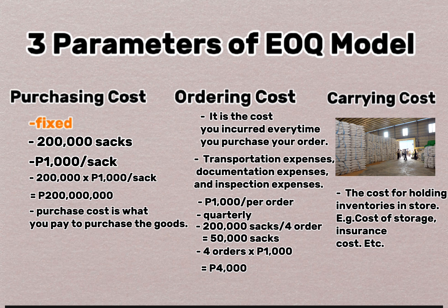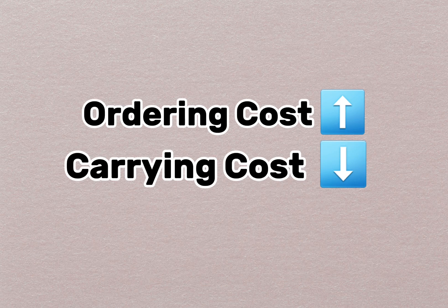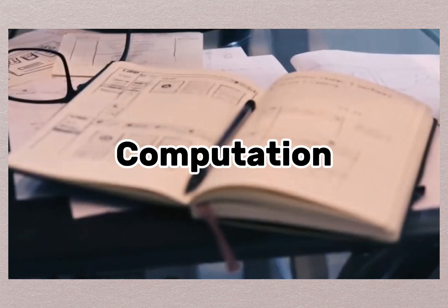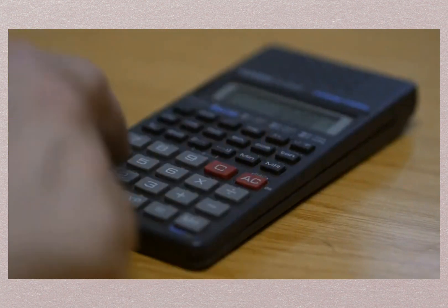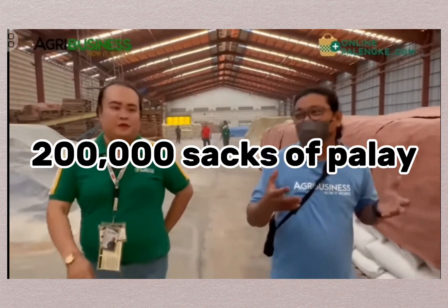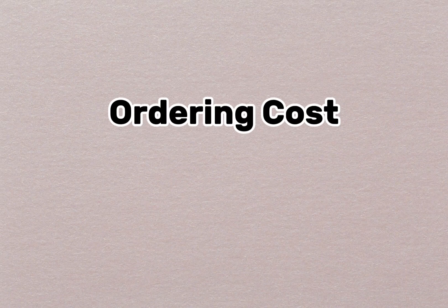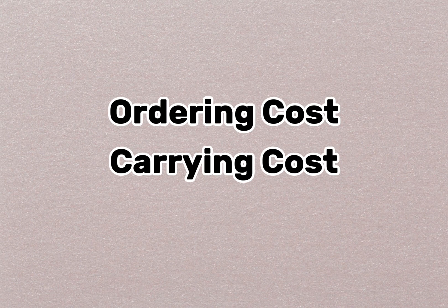So those are the three parameters of EOQ model. Purchasing cost is fixed, while ordering cost and carrying cost have a negative relationship. Why? Because when the ordering cost is more, carrying cost is less. If carrying cost is more, ordering cost is less — vice versa. So let's proceed to the computation to fully understand the concept behind the EOQ model, using our previous example of the rice distribution business in Rizal ordering from Occidental Mindoro.